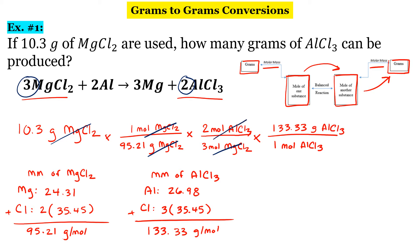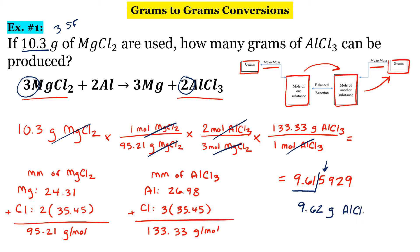Our units of moles of aluminum chloride are going to cancel. When I multiply this out on my calculator, I get 9.615929. I see three significant figures in our original number, so I need three in my final answer. Going from left to right, I underline the first three significant digits and look at the fourth — in this case, I will round up. This gives 9.62 grams of AlCl₃, aluminum chloride. It's a lot of work, but if you follow that flowchart, all the steps are there.